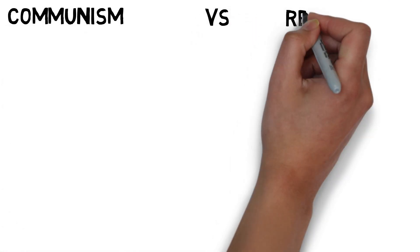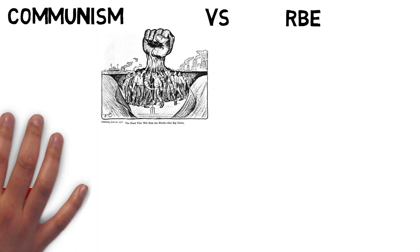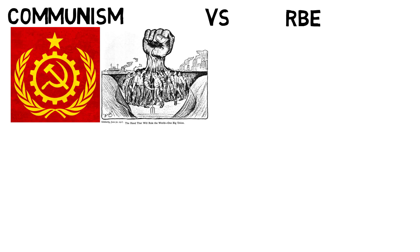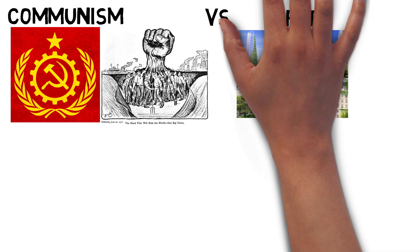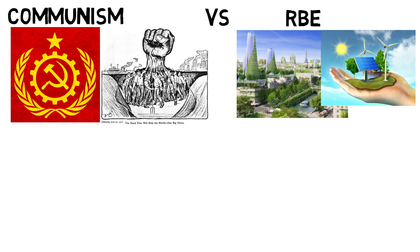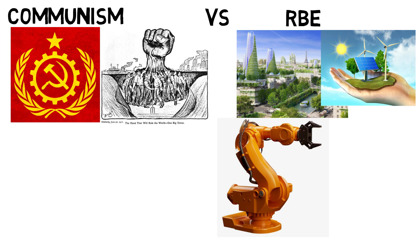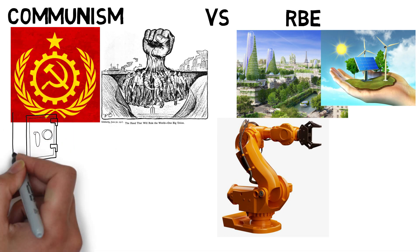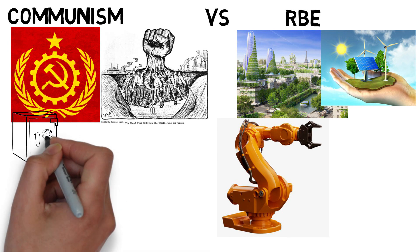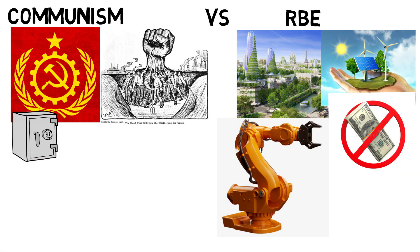An RBE has many similarities to communism, but it's not the same. Communism was primarily based on a moral idea, while in an RBE, we primarily use science and logic to guide our decisions. In the time of communism, there was scarcity. In an RBE, we create abundance with the help of technology that was not available in the time of communism. History shows that communism was never implemented ideally according to its ideology. In fact, communism looked more like socialism because of the use of money. In an RBE, there is no money.